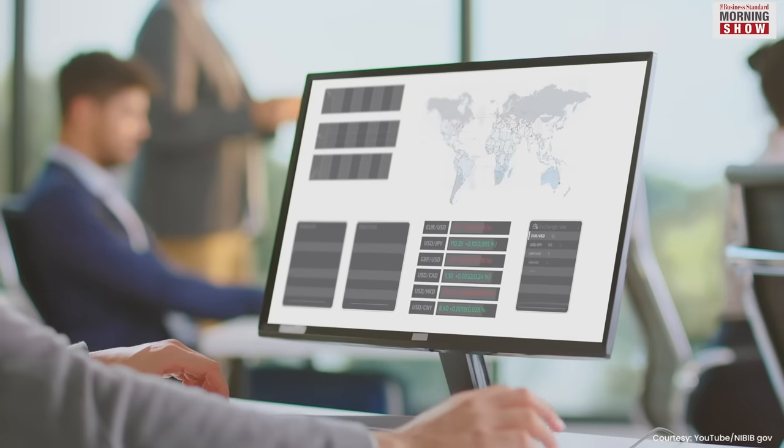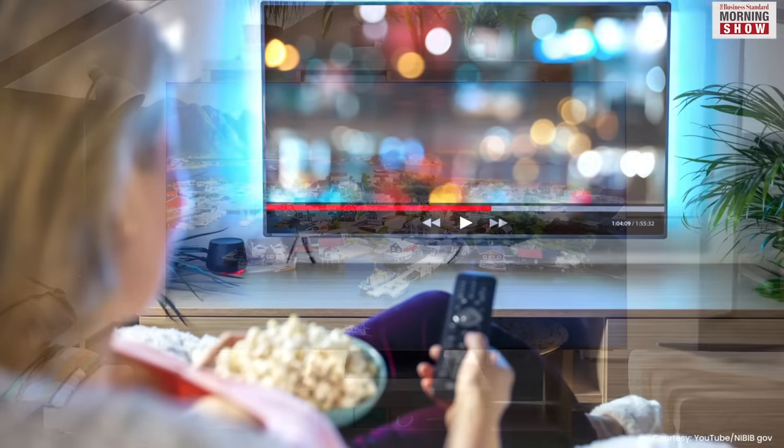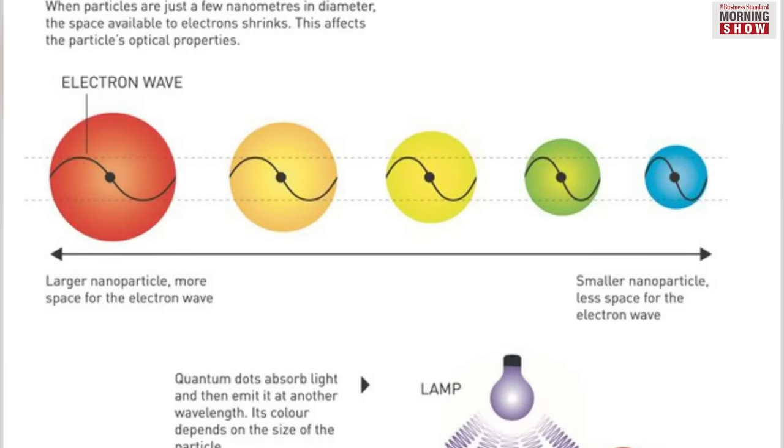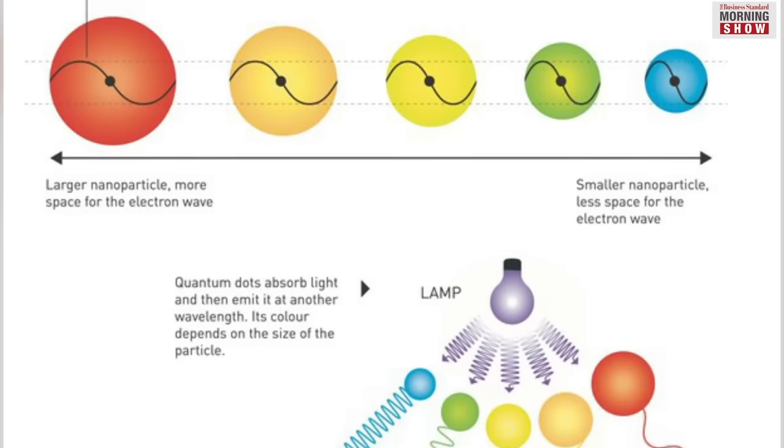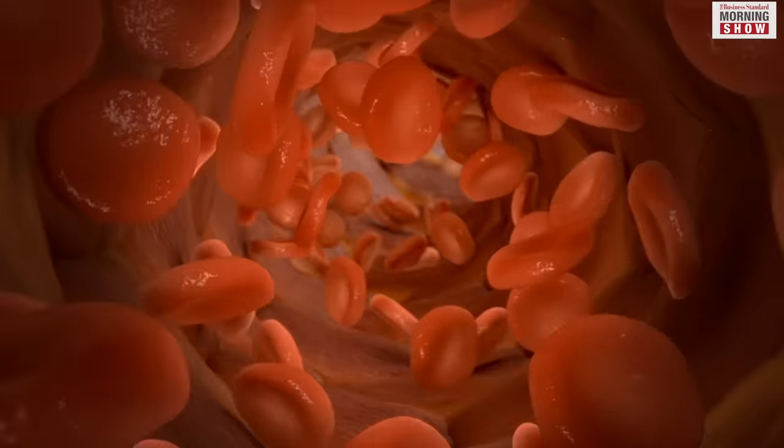Quantum dots now illuminate computer monitors and TV screens made of QLED technology. The smallest dots emit shorter wavelength light. Enlarging the dots slightly changes the color composition.